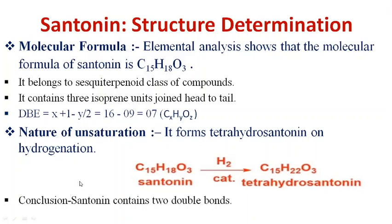Next we come to the structure determination of centonin, which is based on chemical analysis. First, from elemental analysis, the molecular formula of centonin is C15H18O3. The 15 carbon atoms indicate it belongs to the sesquiterpenoid class, and according to the special isoprene rule, the three isoprene units are joined in head-to-tail fashion. The degree of unsaturation is calculated to be seven.